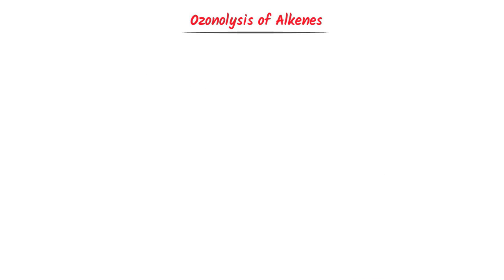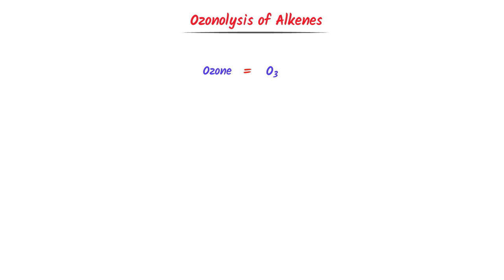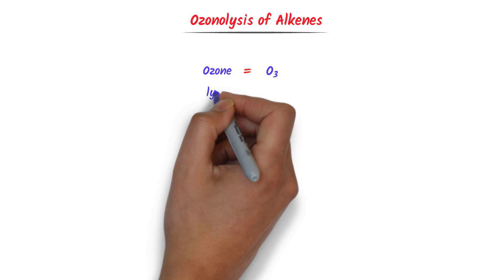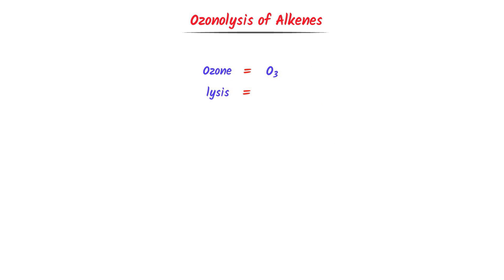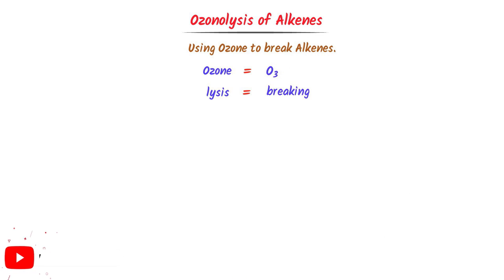Ozonolysis of alkenes. We know that ozone is O3, which is the allotrope of oxygen, while 'lysis' means breaking something. Hence, ozonolysis of alkenes means using ozone to break alkene.